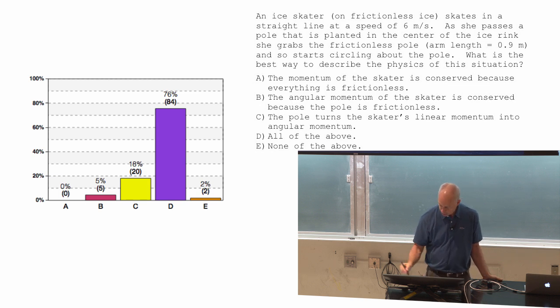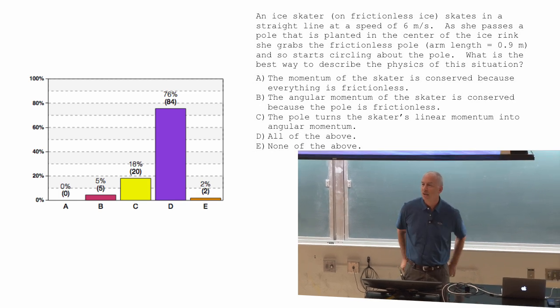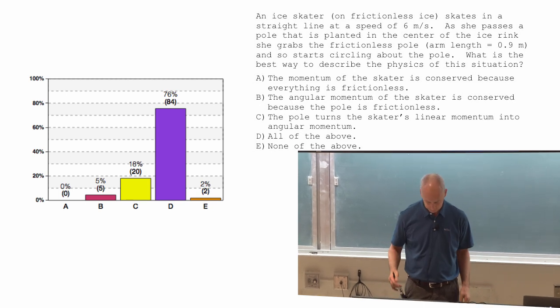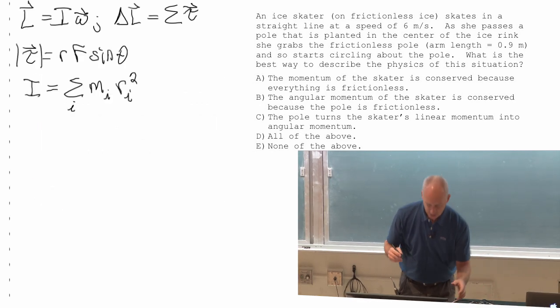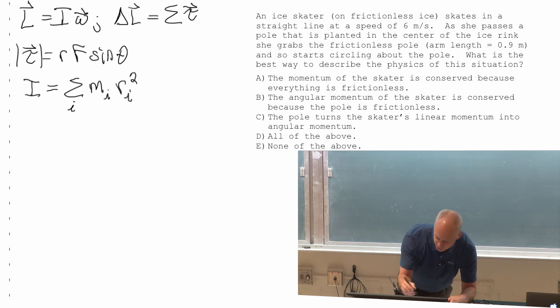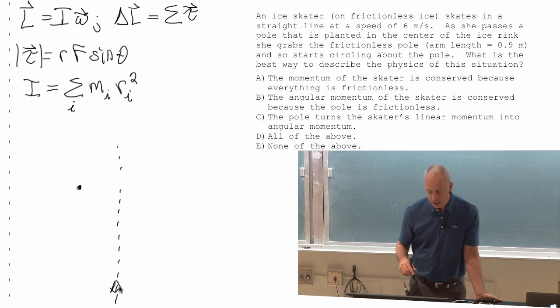So I just want to point out to you that when she was moving straight, there was no torque on her. There was nothing causing her to change her angular momentum, that includes angular speed. That's kind of the path that she would have taken if she didn't grab that pole. I'm going to put the pole on her left right now.